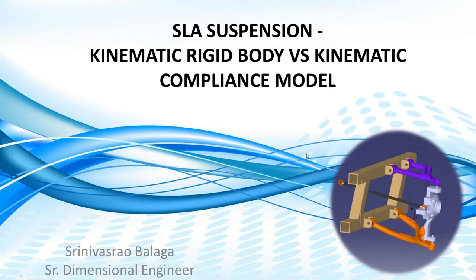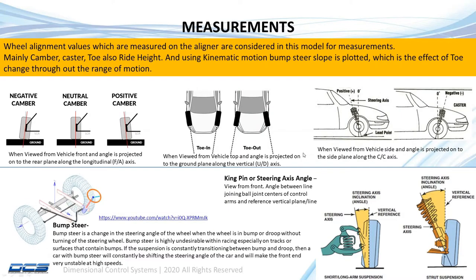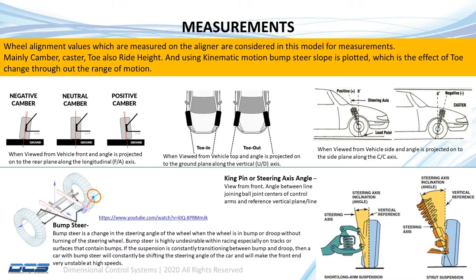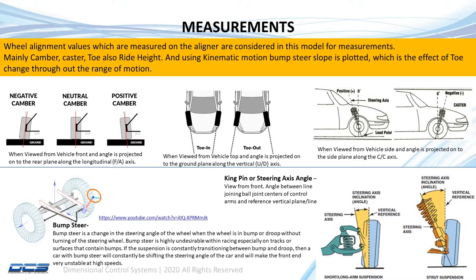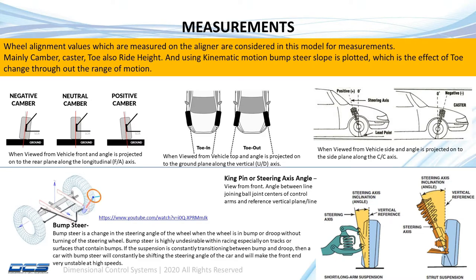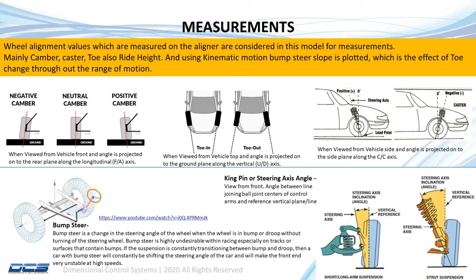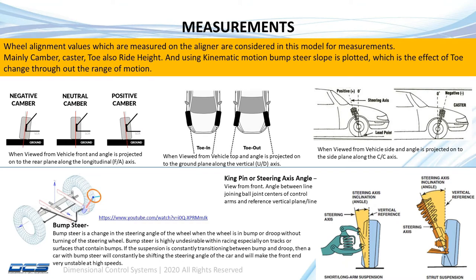We're going to talk about the stack objectives: we're going to measure the camber, caster, ride height, and the kingpin angle axis variation, which are the major stack objectives for any suspension model in automotive. On top of that, we're going to see the kinematic behavior of the suspension, which is the bump steer, and how it differs between the rigid body versus the compliant modeling.